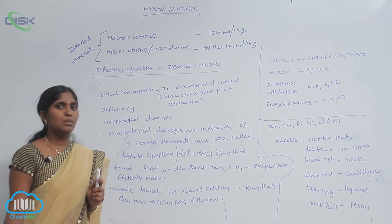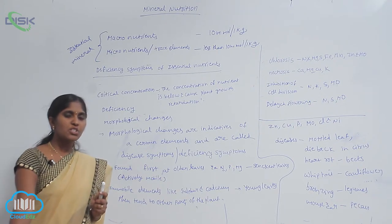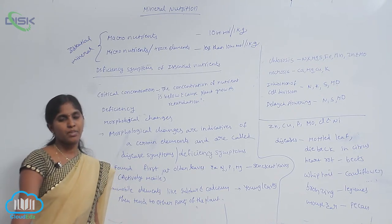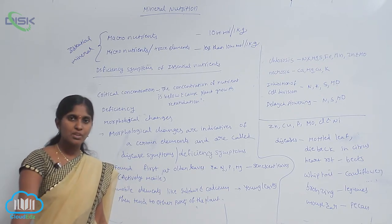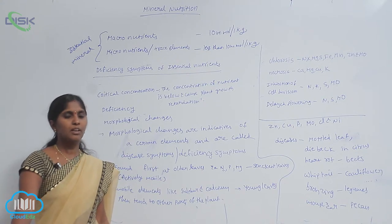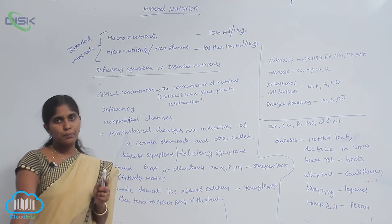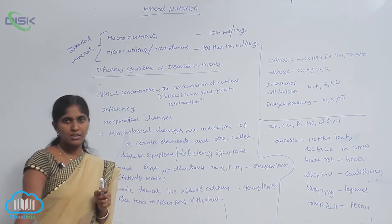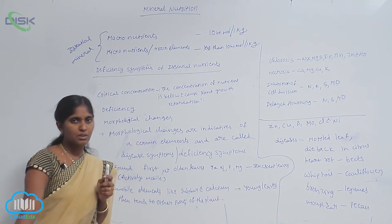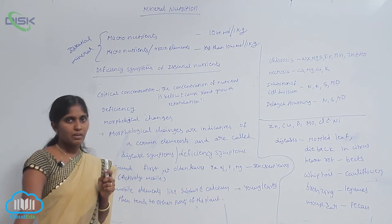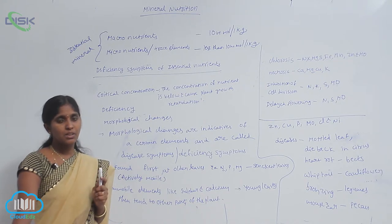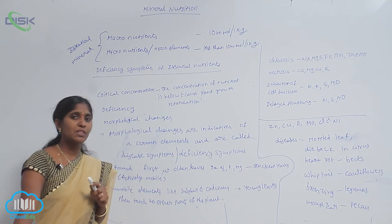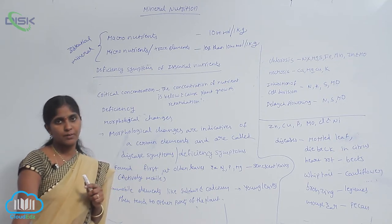What are the deficiency symptoms? The deficiency symptoms are found in first leaves if the ions or nutrients are mobile. Mobile means one cell to another cell, one part to another part. The mobile ions deficiency is found at first in older leaves.